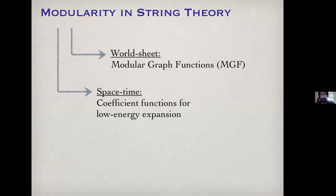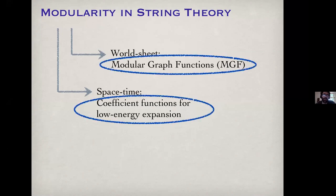I want to talk about two particular instances of modularity in string theory. In particular, there are going to be two types of objects: one constructed from a worldsheet point of view, which goes under the name of modular graph functions, and another one which can be seen from the spacetime point of view, producing another set of modular invariant functions — coefficient functions of the low energy effective action from string theory.